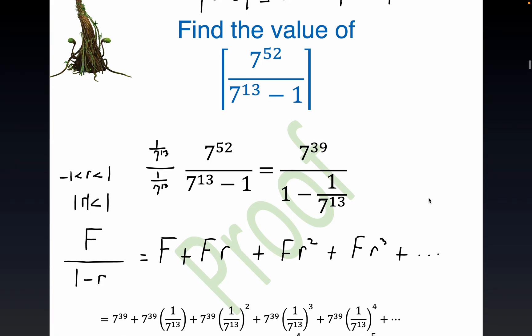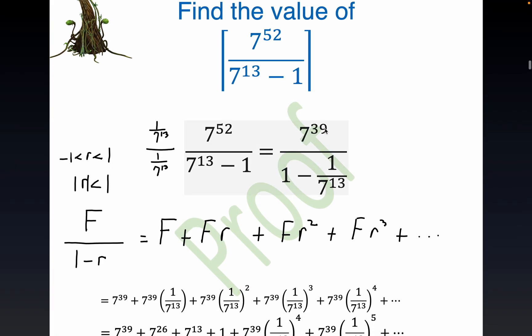Plus f r plus f r squared plus f r cubed ad infinitum. So what we do is we take this. This is the object that looks like this, right? This and this are easy to identify with each other. So you get 1 over 7^13 as your r.